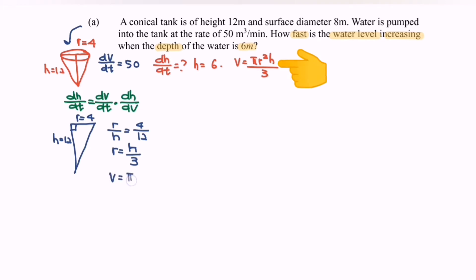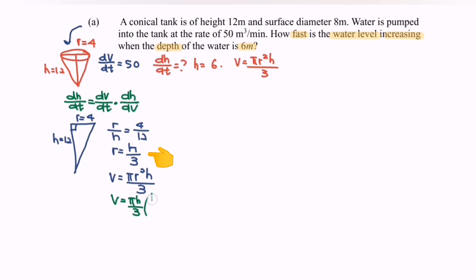Substituting r = h/3 into the volume formula V = πr²h / 3, we get V = π(h/3)²·h / 3 = π(h²/9)·h / 3, which simplifies to V = πh³ / 27.